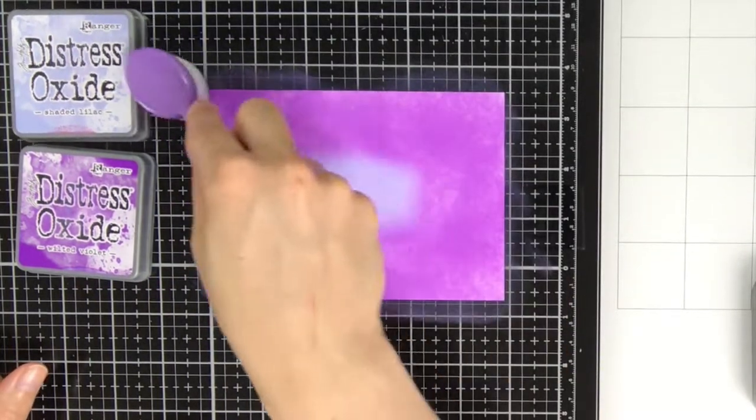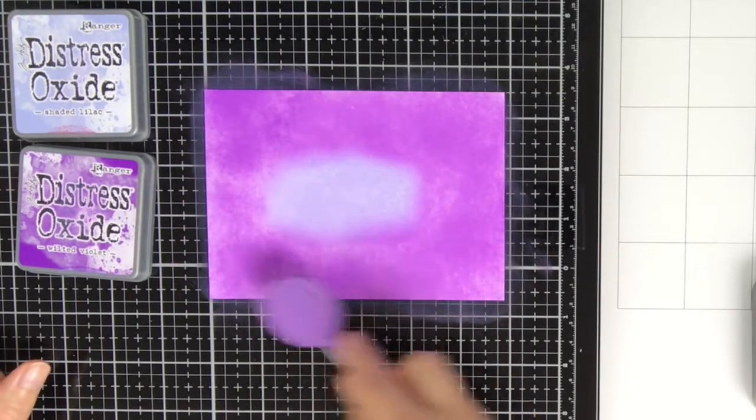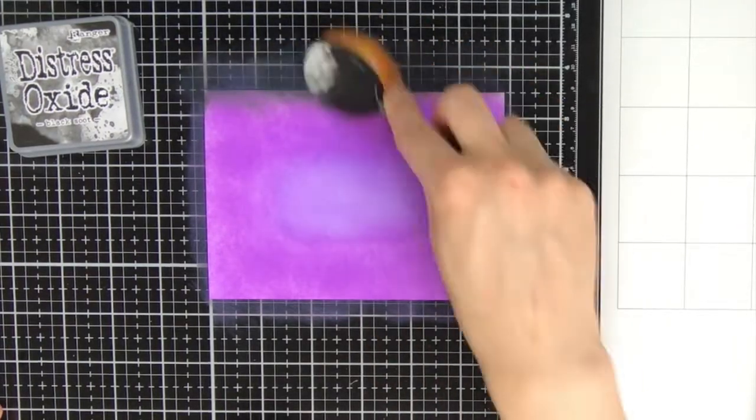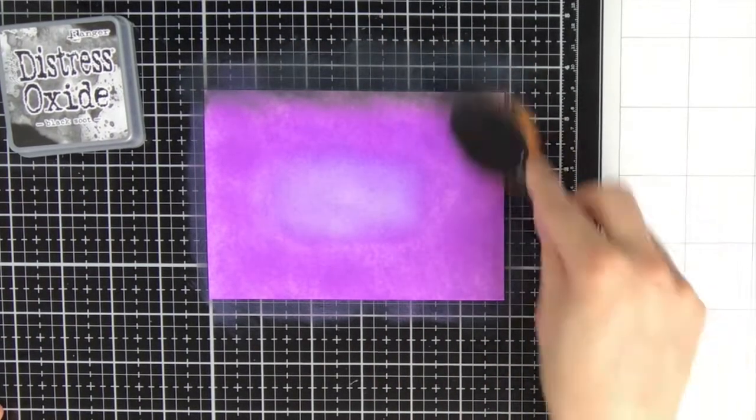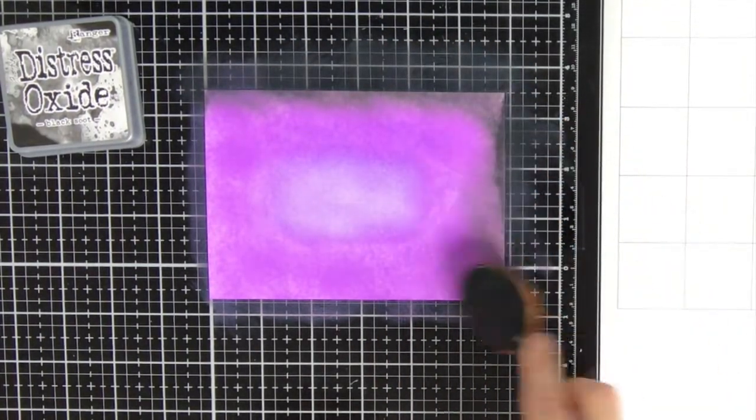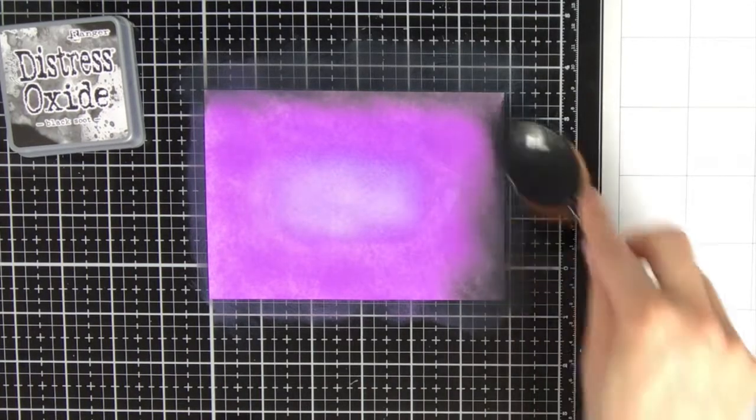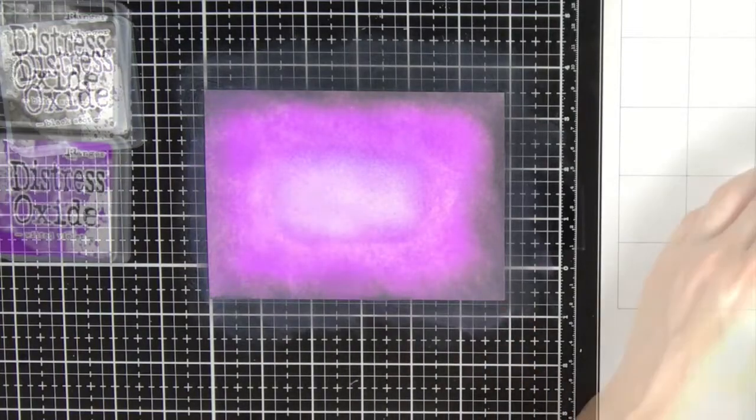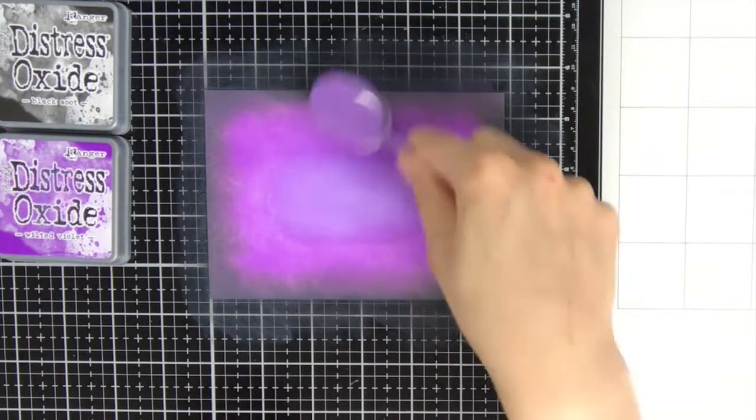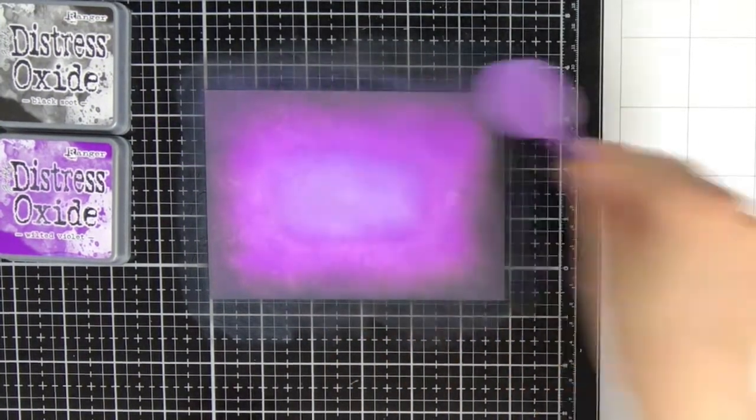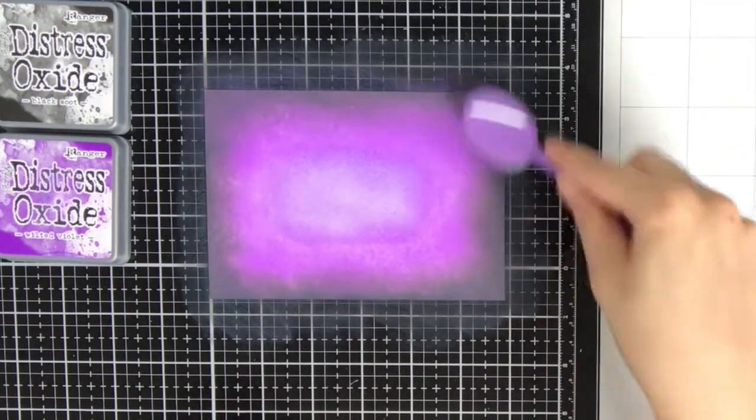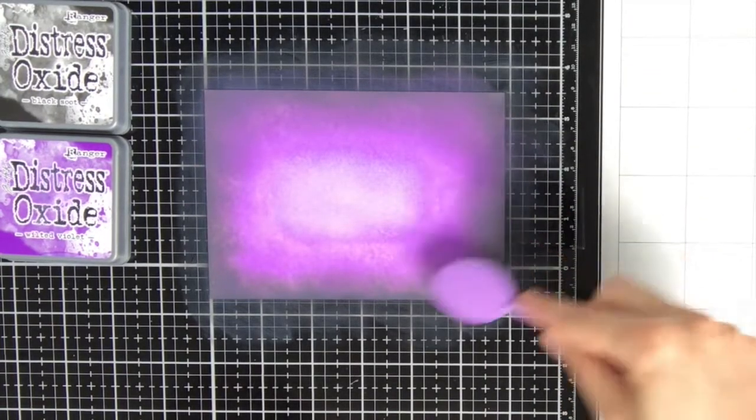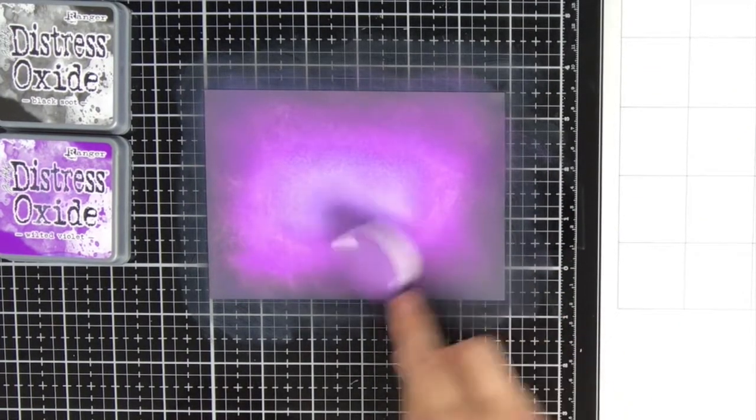When I do ink blending I always like to use the Tailored Expressions Blender brushes. I really love these brushes. They are nice and soft and really make applying the ink and blending so much easier. To make sure the center will really pop and look lighter, I also went around the edges with Distress Oxide Ink Black Soot. When the edges are darker, the center will appear lighter and more vibrant.